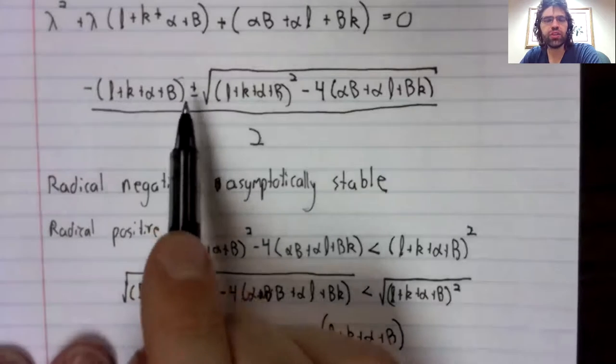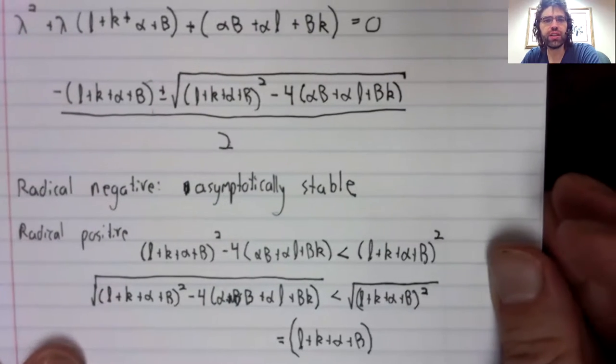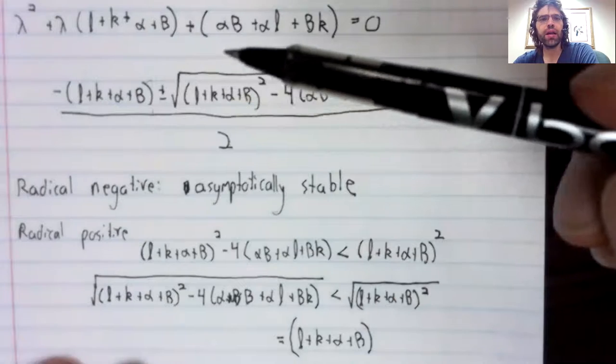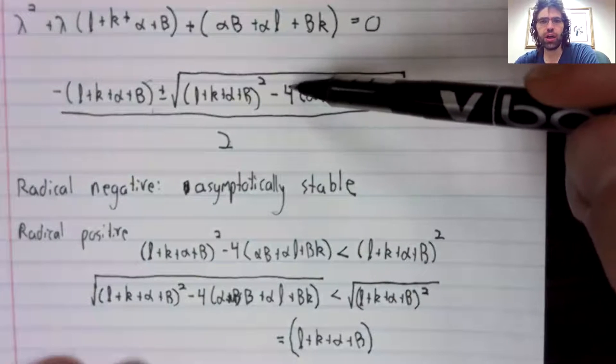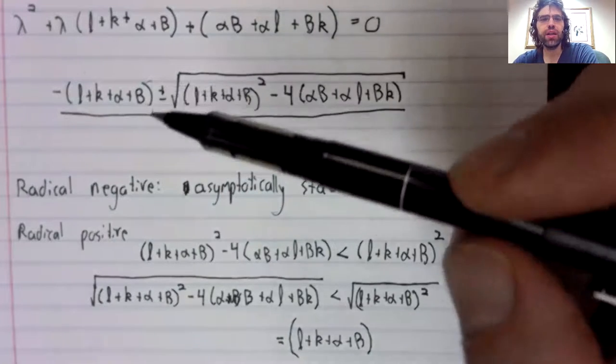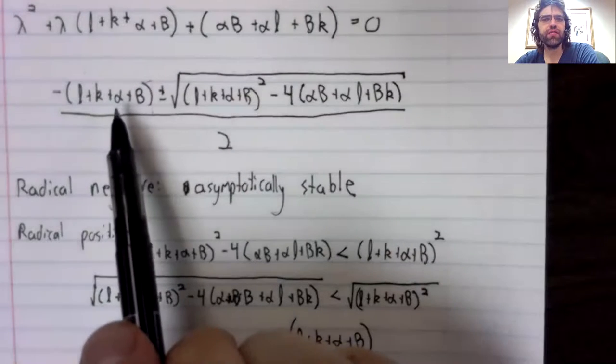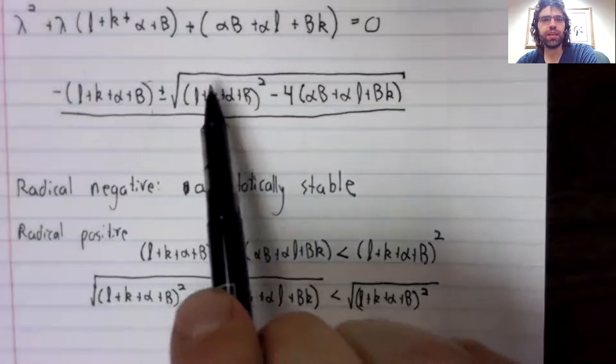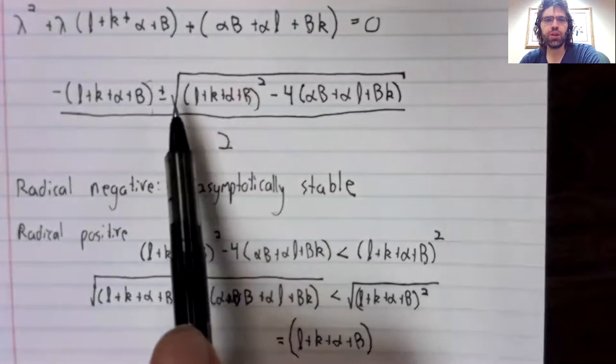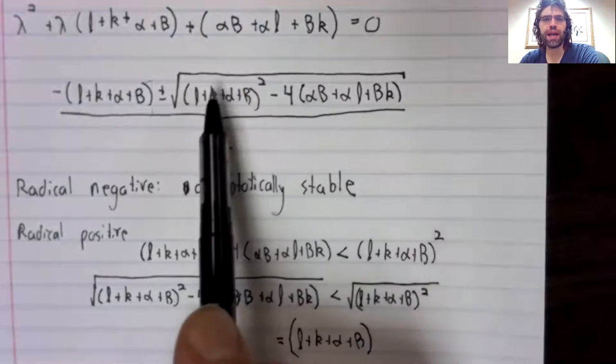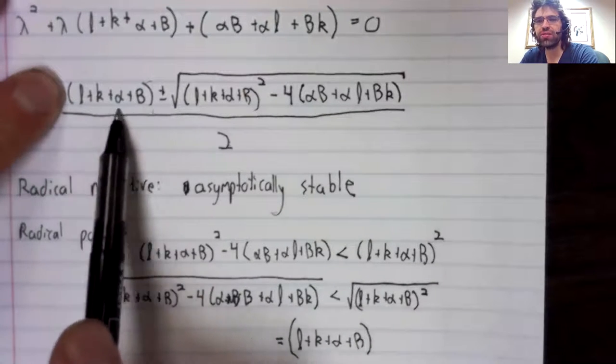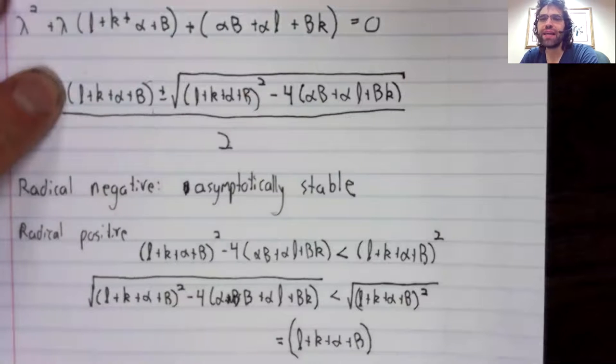We've got addition and subtraction here. If we take a negative number and subtract a positive number, the result is negative. If we take a negative number and add a positive number, but this positive number is smaller than the absolute value of the negative, the result is still negative.